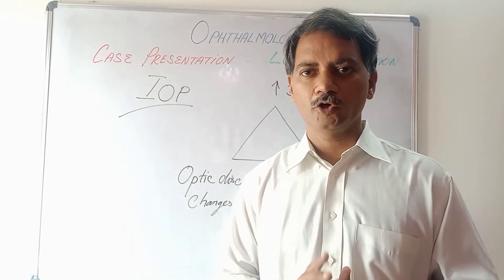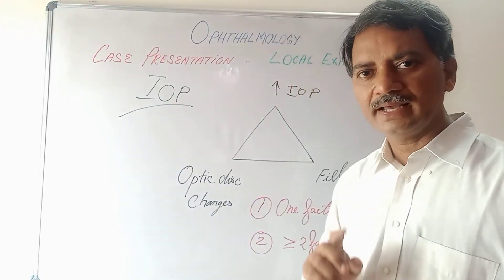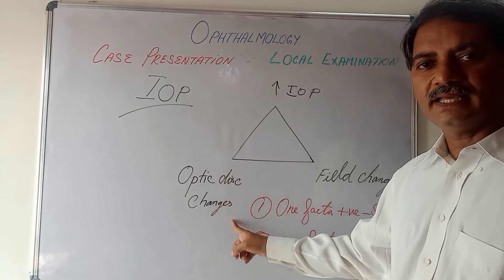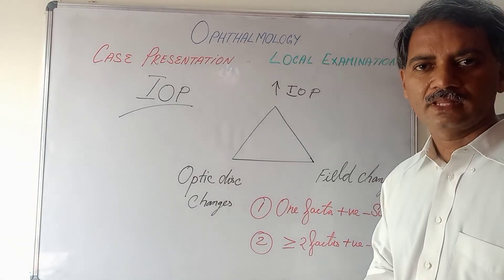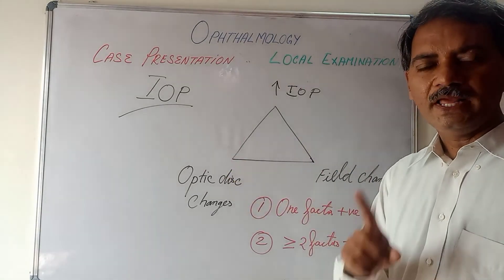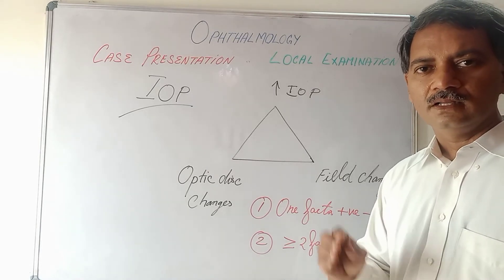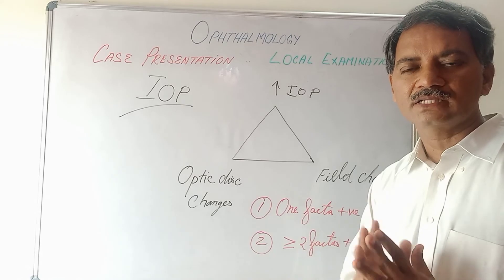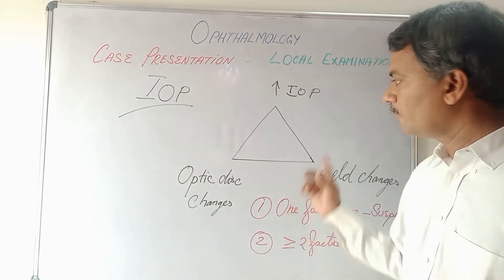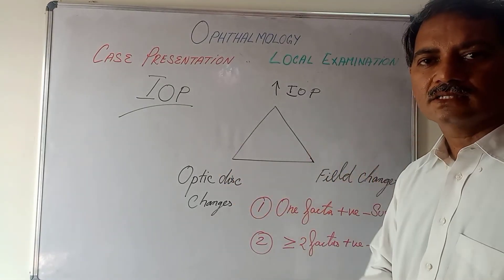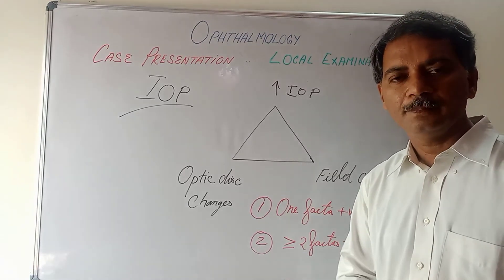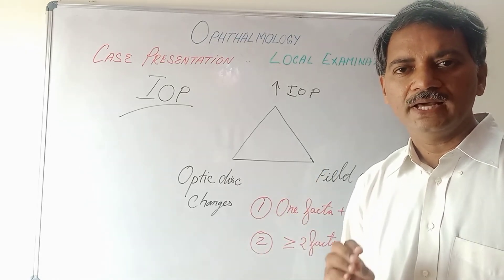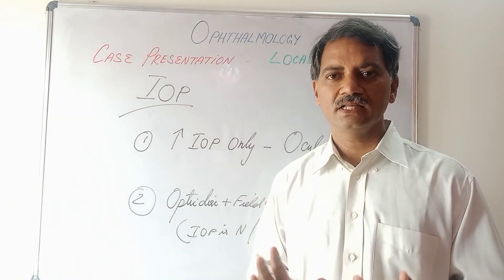To diagnose glaucoma, there are three criteria: raised intraocular pressure, optic disc changes, and visual field changes. If only one of these three criteria is positive, the patient is considered a glaucoma suspect — we cannot confirm glaucoma. If two out of three criteria are positive, the patient is diagnosed with glaucoma. Two criteria are essential to confirm a glaucoma diagnosis.